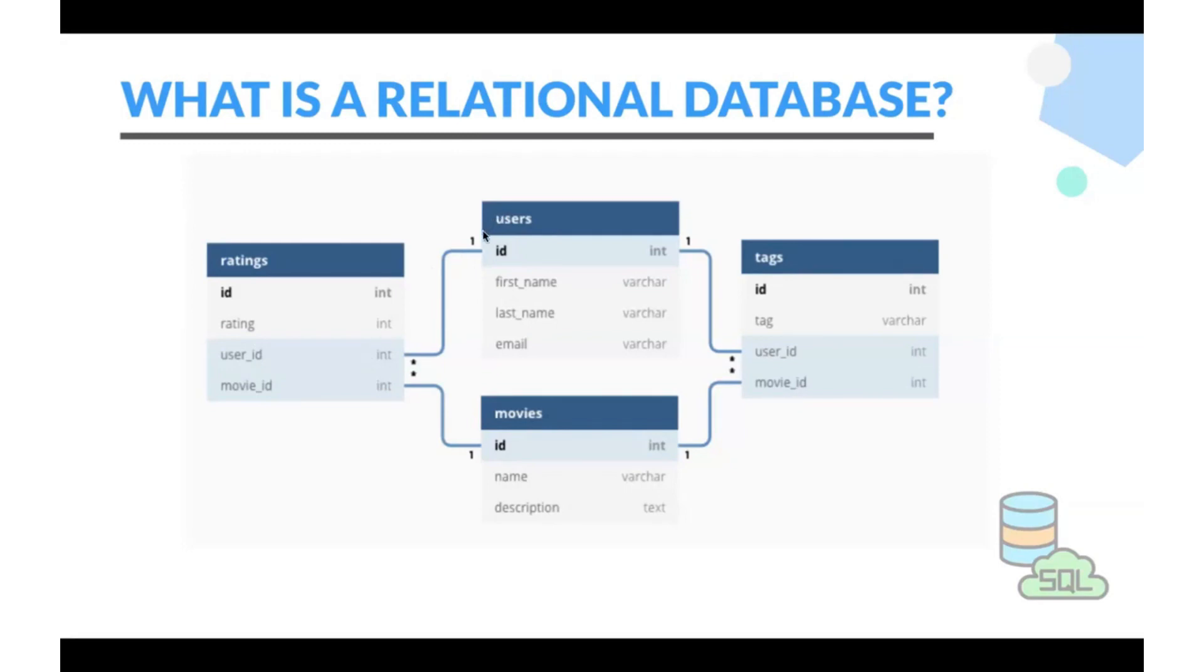So that's what relational database is. We are creating relation between this table and this table. Ratings table and users table using which two attributes? User ID attribute and ID attribute.